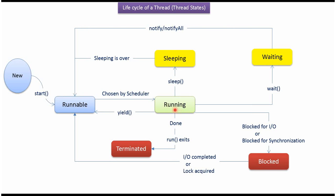From running state, a thread can go to blocked state if blocked for IO or blocked for synchronization happens. From blocked state, the thread can go back to runnable state if IO is completed or a lock is acquired.